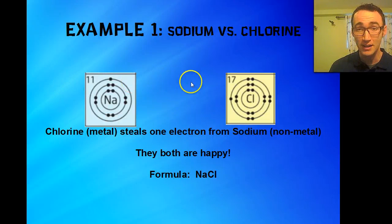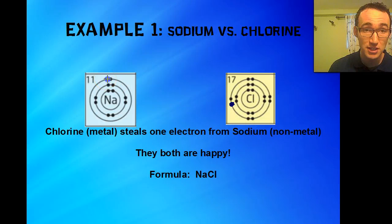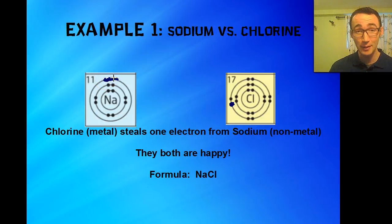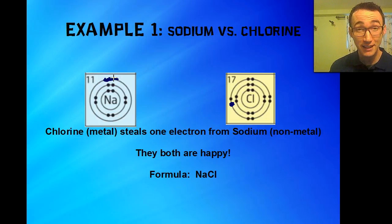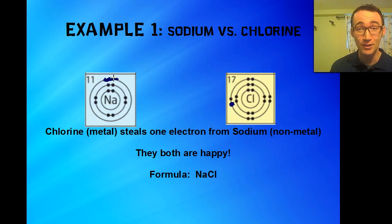So the chlorine is going to steal an electron from the sodium. Now it's happy — there's a full set of electrons — and the sodium just lost this electron. They're both happy, and so that's why they come together and can make each other happy. It's a beautiful story. So the formula would be NaCl, because you need one of each in order for the outer shells to become happy.